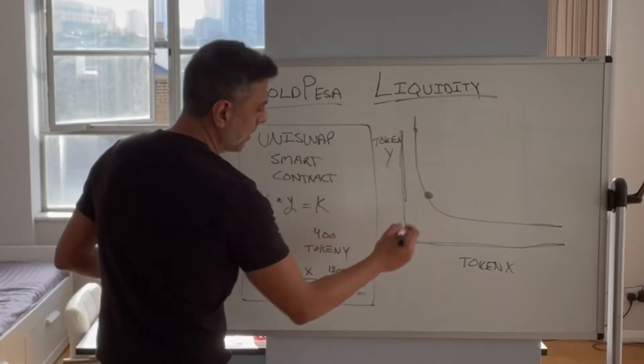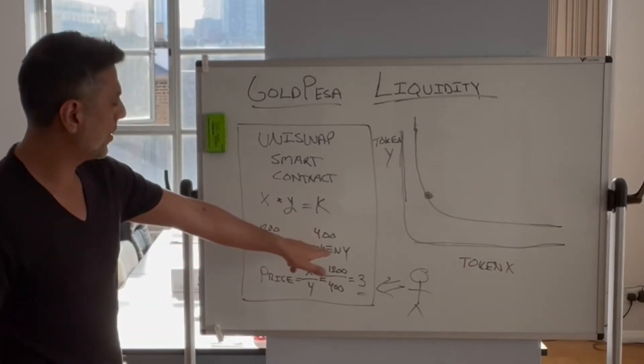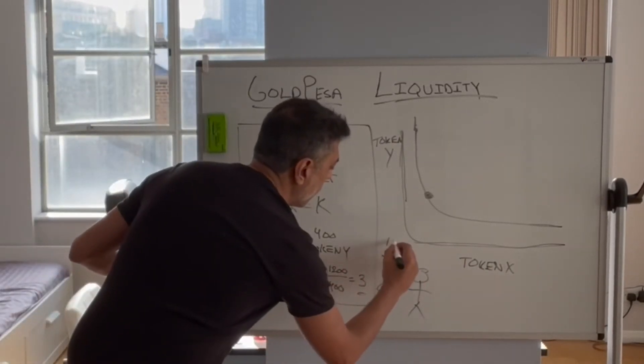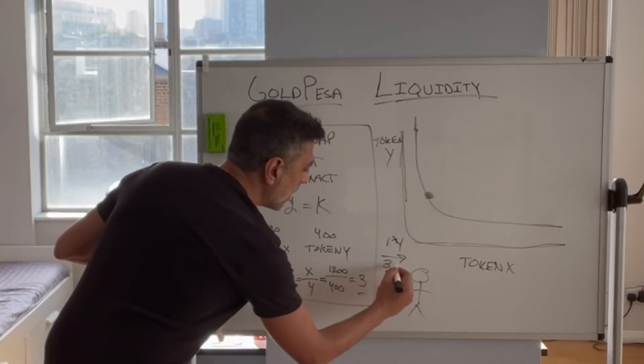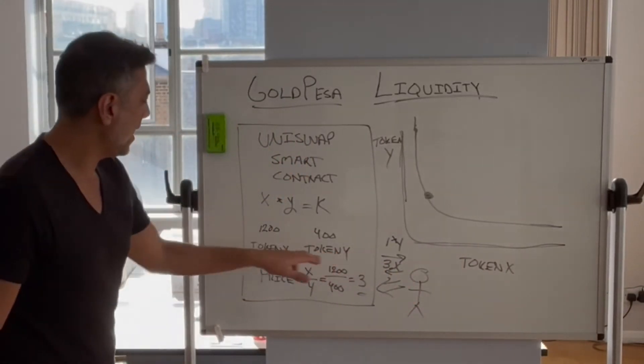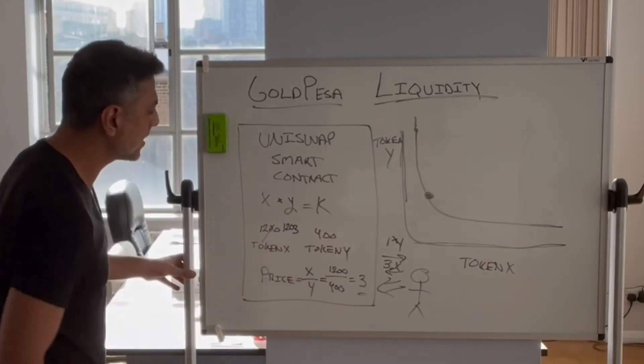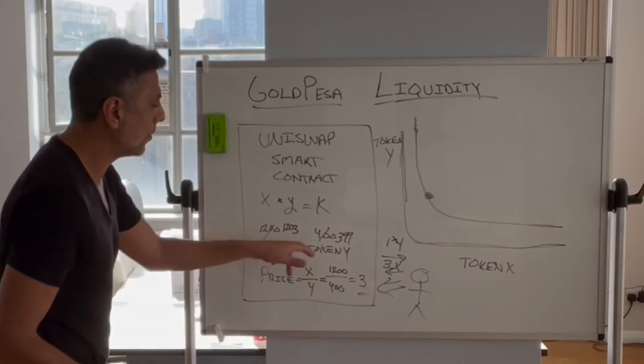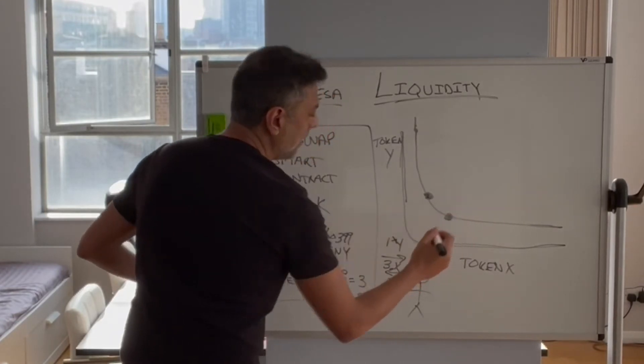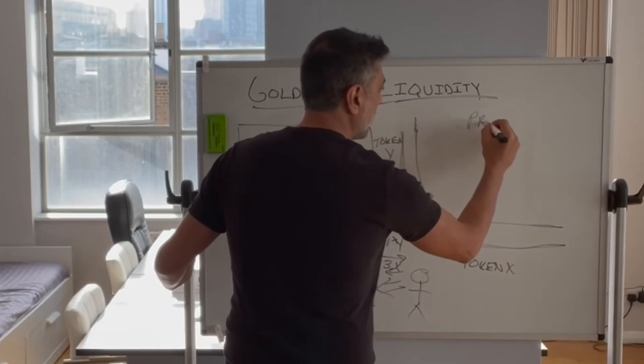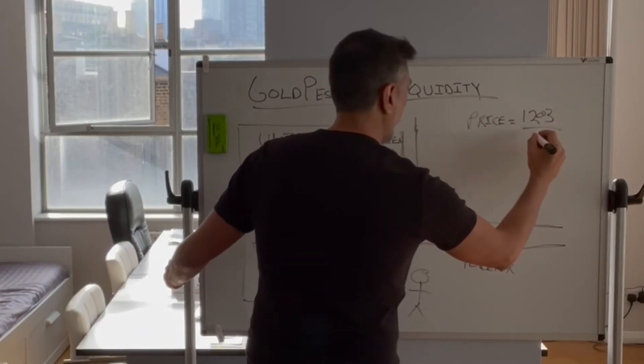So let's say somebody comes to the bureau and says, I'm going to buy one token of y, and I am going to deposit three token x. In which case, what would happen is you'd have 1203 token x, and you'd have 399 token y after the transaction is complete. What this would do is take you to this point in the curve. And the price, which is x over y, now becomes 1203 divided by 399.